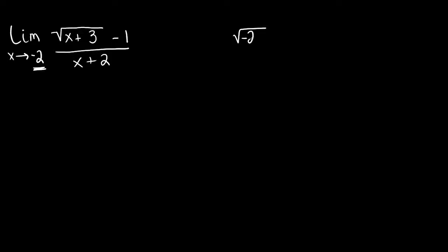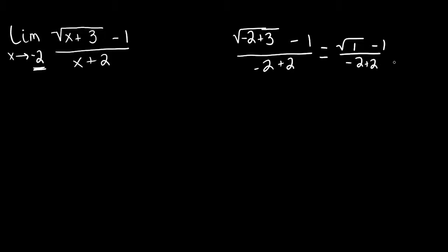So here we get the square root of negative 2 plus 3, minus 1 over negative 2 plus 2. So let's evaluate the stuff inside of the radical first. The square root of negative 2 plus 3 becomes the square root of 1, minus 1 over negative 2 plus 2, which gives us 1 minus 1 over 0, or 0 over 0.